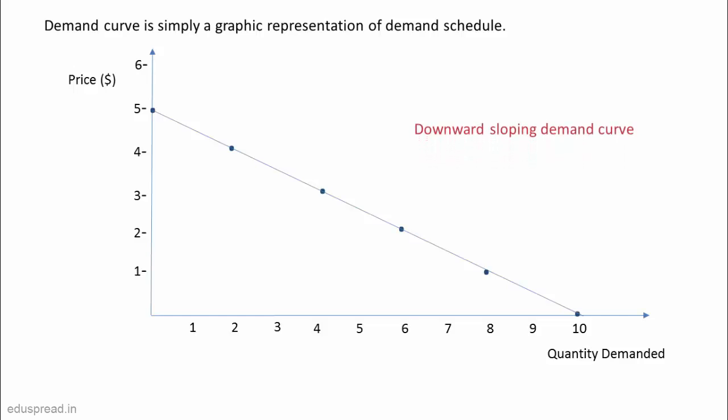As you can see, the demand curve here slopes downward. This is because a lower price increases the quantity demanded, keeping other factors constant. In almost all these situations, you will encounter a downward sloping demand curve only.